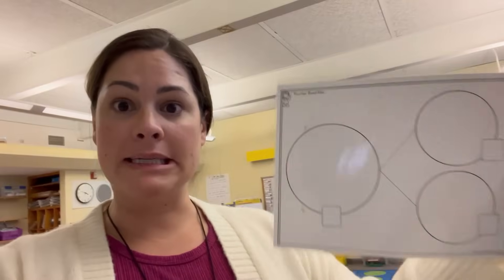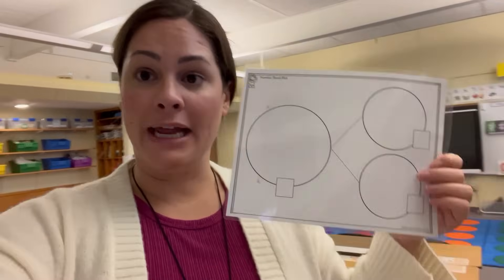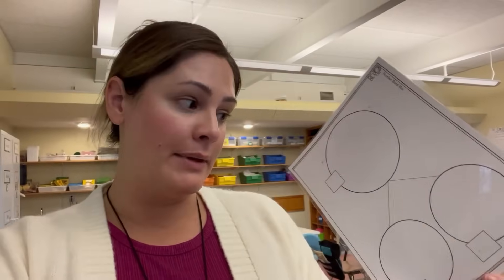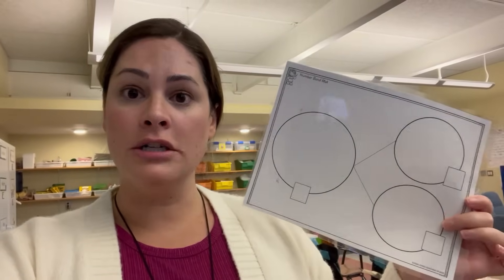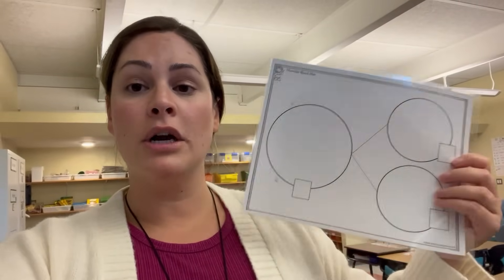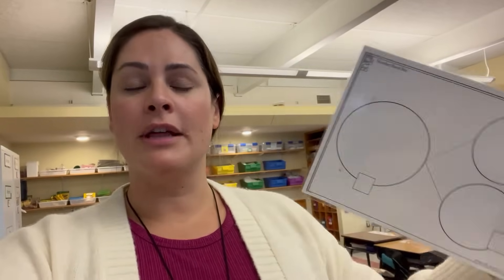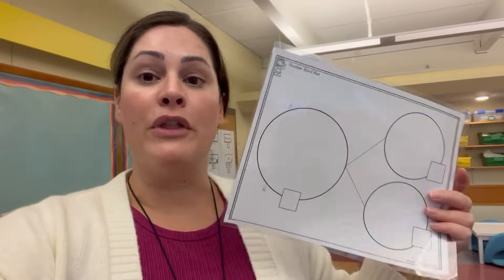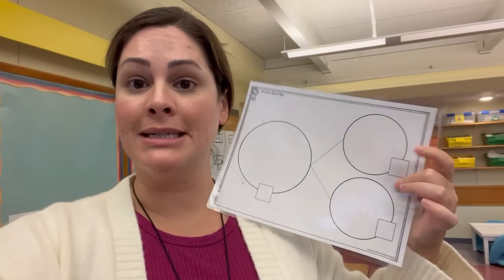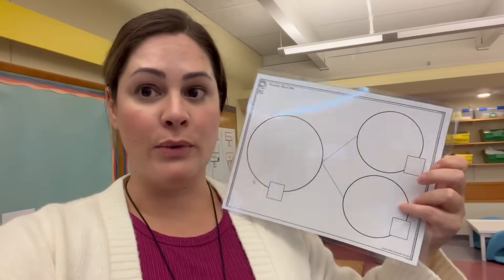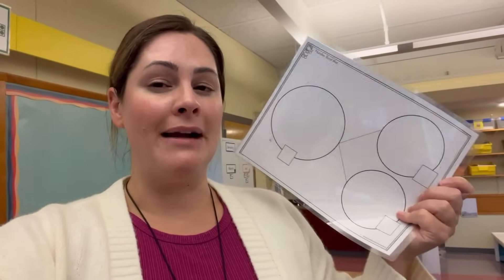I'm also going to give them one of our laminated number bond mats from our whole group number bond lesson. We'll have already talked about the relationship between a number bond and a fact family, so I might have them fill this chart for some of those problems. As they solve an addition problem they can write three plus four equals seven in the number bond to show that relationship. With subtraction we need to know that the whole number is our whole, the part we're subtracting is one part, and what we're solving is the other part — that's still a little tricky.